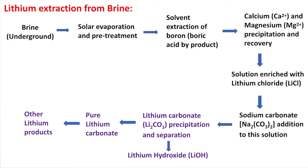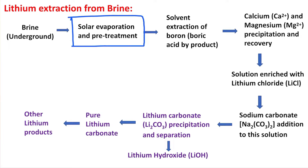Looking at the stepwise brine-to-lithium extraction: first, brine is pumped from underground and allowed for solar evaporation and pretreatment, which enriches the salt concentration in the solution. Later, impurities are removed. Boron is first removed in the form of boric acid by treatment of the brine with isopropyl alcohol, which produces an ester, and ultimately these esters are removed using heating. Then magnesium and calcium are both precipitated out by addition of lime to the solution. In this way, three components have been removed.